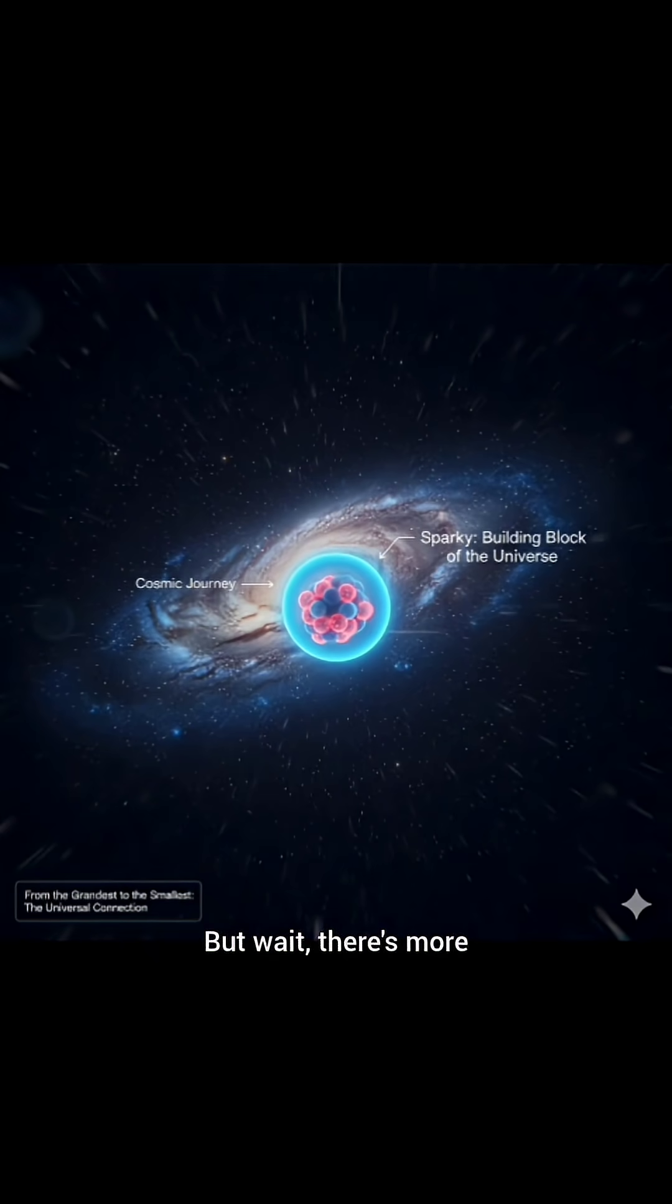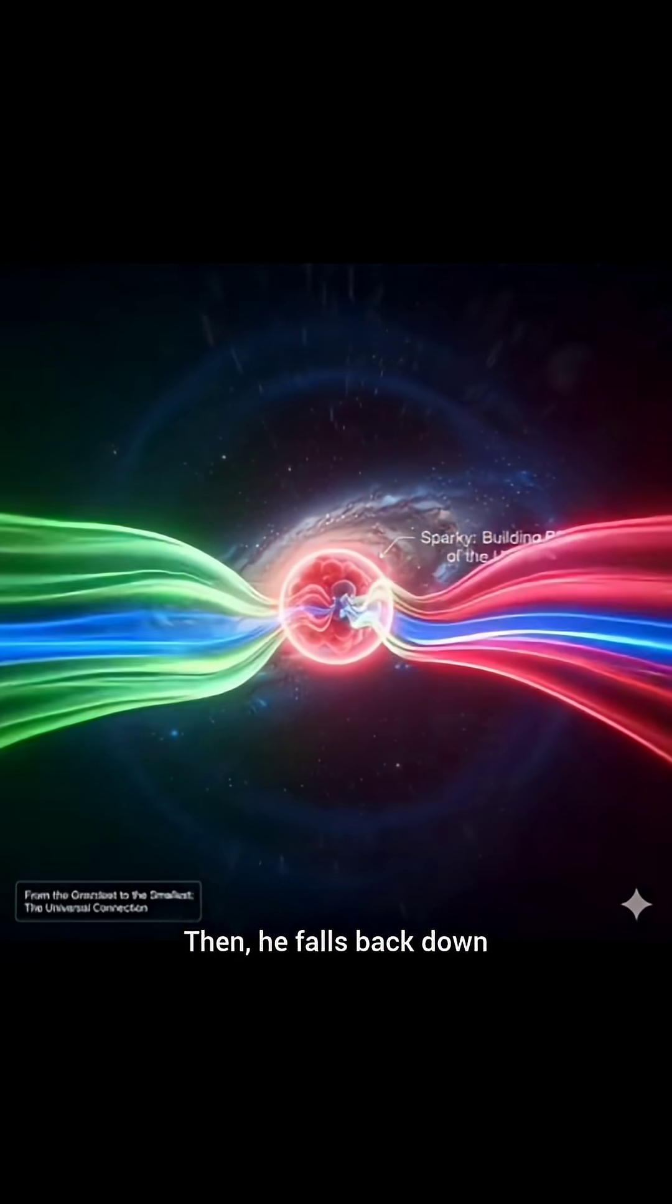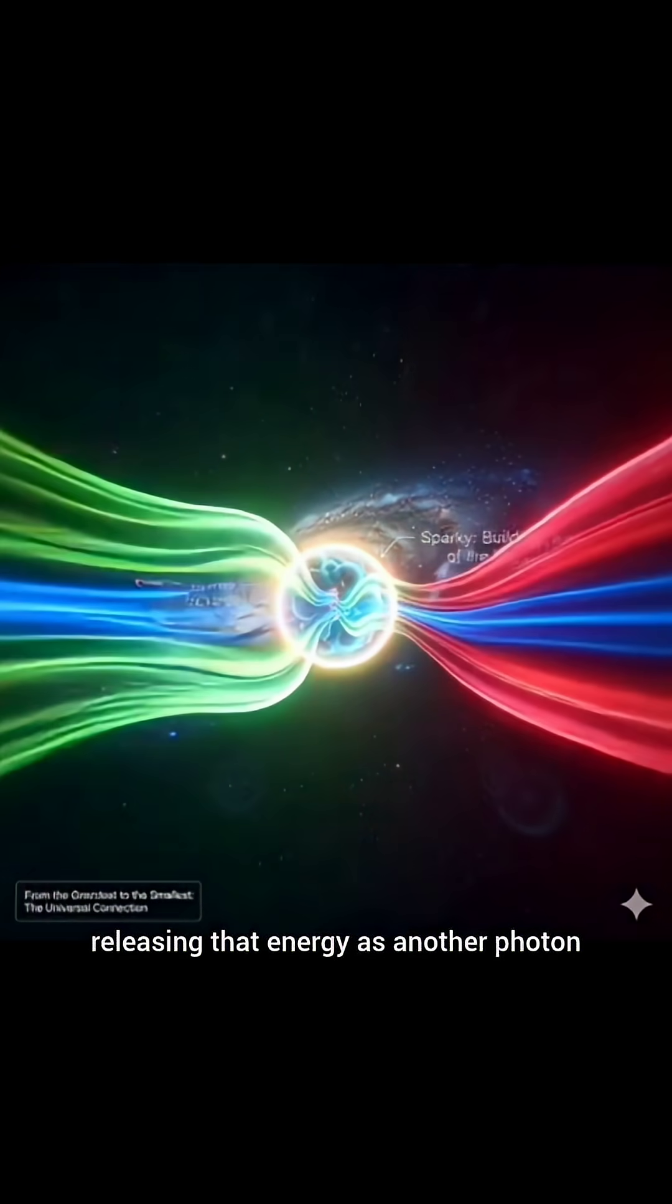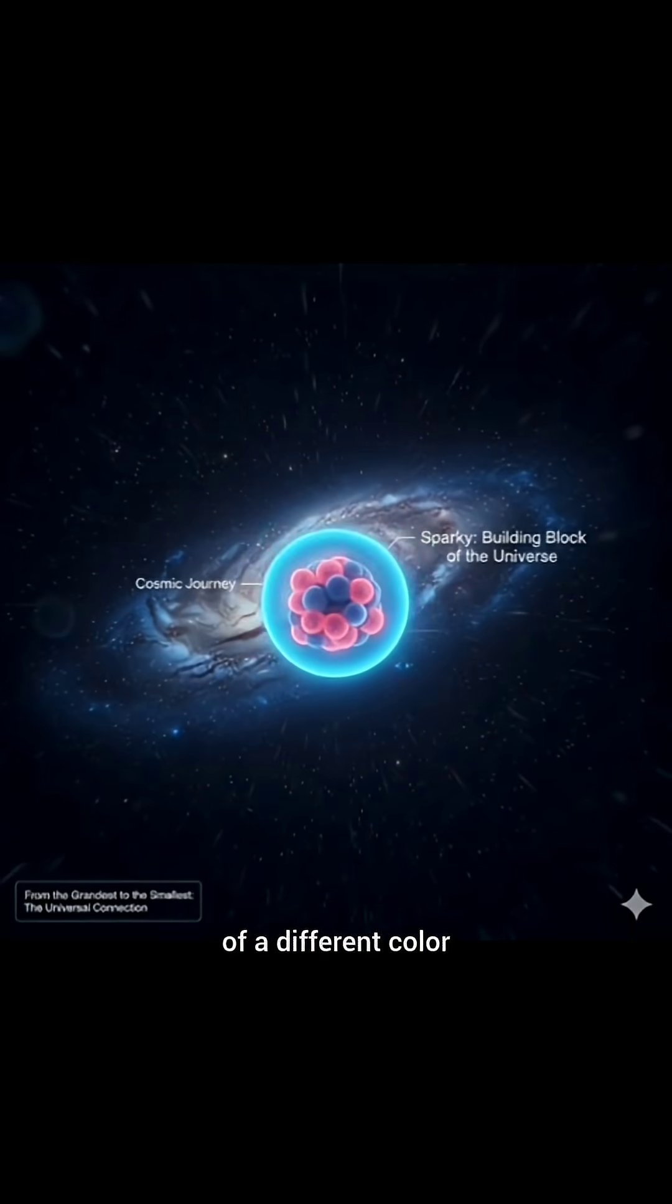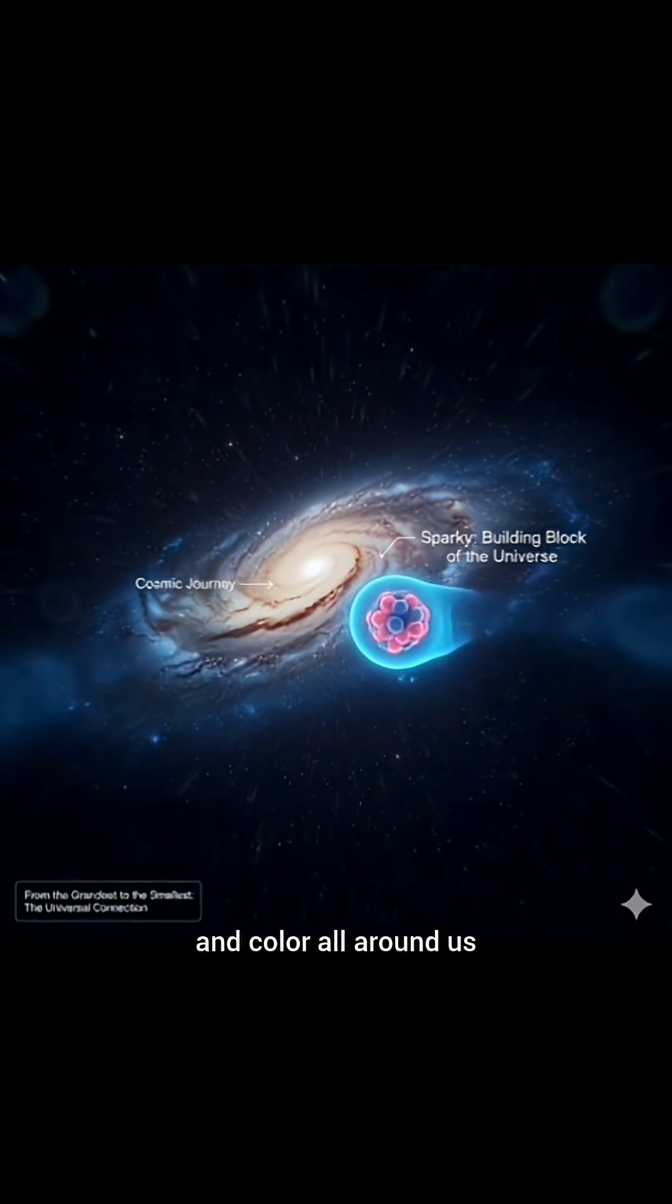But wait, there's more. When a photon, a particle of light, hits Sparky, he gets excited and jumps to a higher energy level. Then, he falls back down, releasing that energy as another photon of a different color. That's how we see light and color all around us.